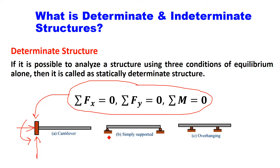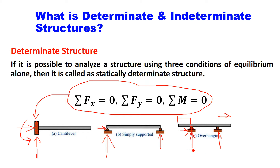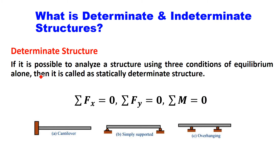Similarly, in a simply supported beam, the left support is a hinge support which has two reactions and the right support is a roller support which has one reaction. So there are three reactions in a simply supported beam — it is also statically determinate. There is one more example: an overhang beam where some portion is extended beyond the support. With one hinge and one roller support, there are still three reactions total. So this is also a determinate beam — the reactions of supports can be determined using three conditions of equilibrium.